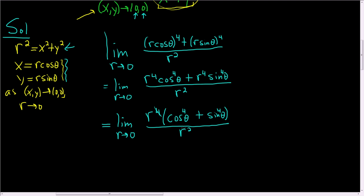And now you see that we lose two copies of r. So this is the limit as r approaches 0 of r squared times this piece here, which depends on theta. So sine of theta to the 4th power.